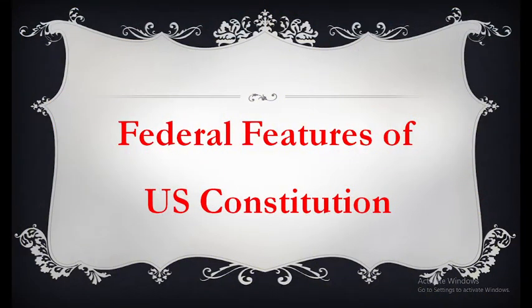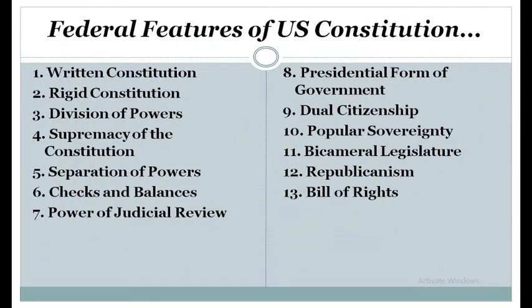Now let's come to the federal features of the US Constitution. These federal features are more or less the same as the salient features of the Constitution of the United States, so we will try to look at them as briefly as we can. First, the United States has a written constitution. The UK has no written constitution. But the United States, as in India and most countries of the world, has a written constitution.